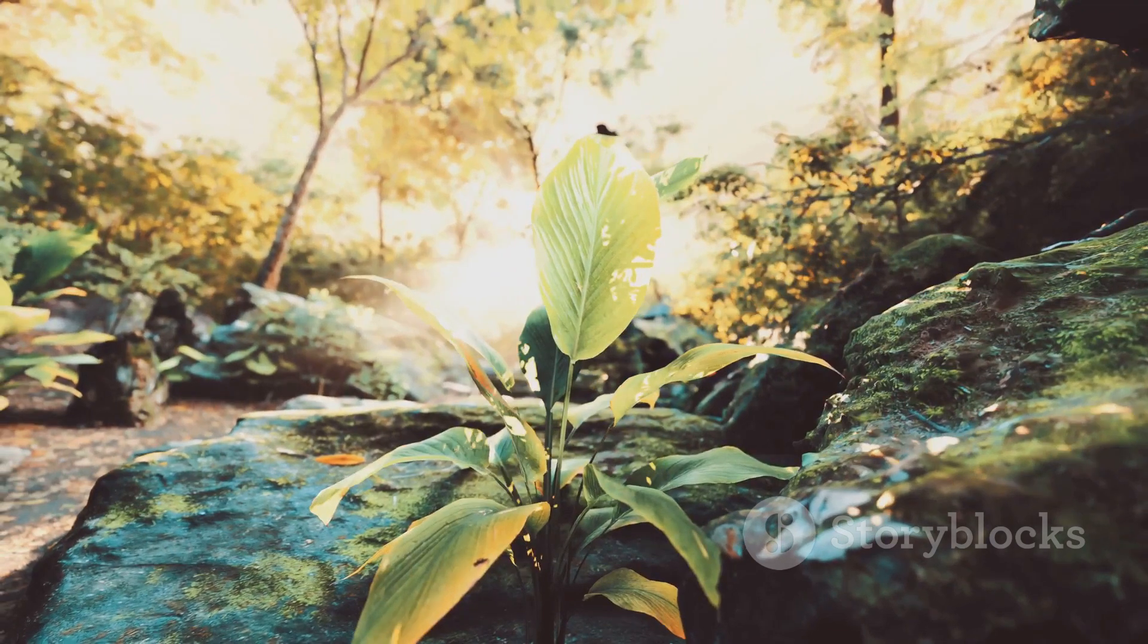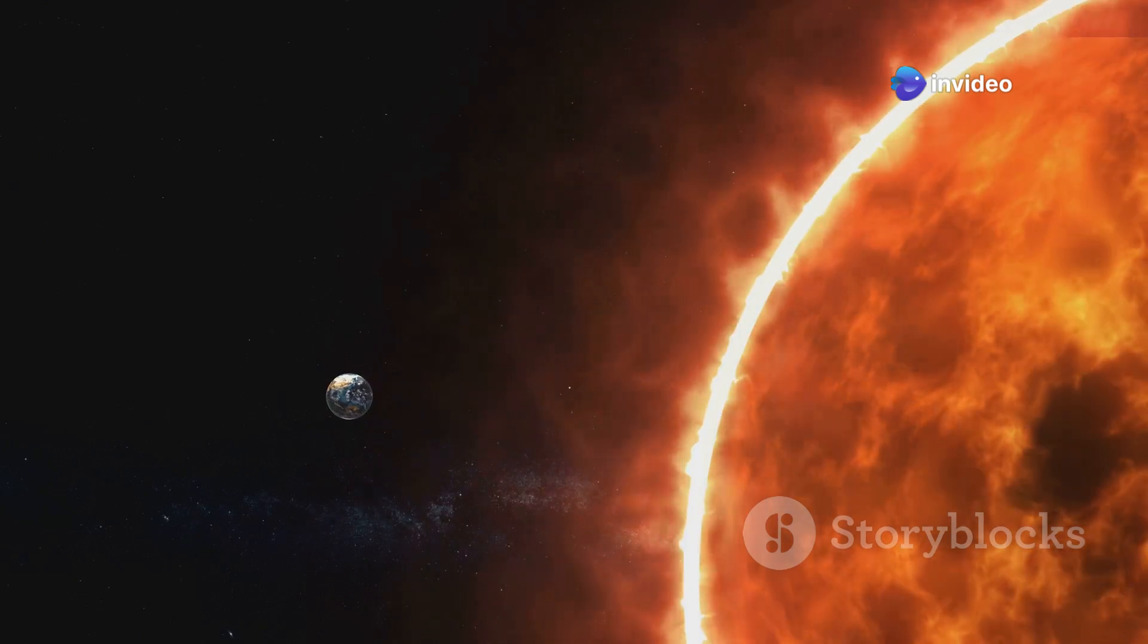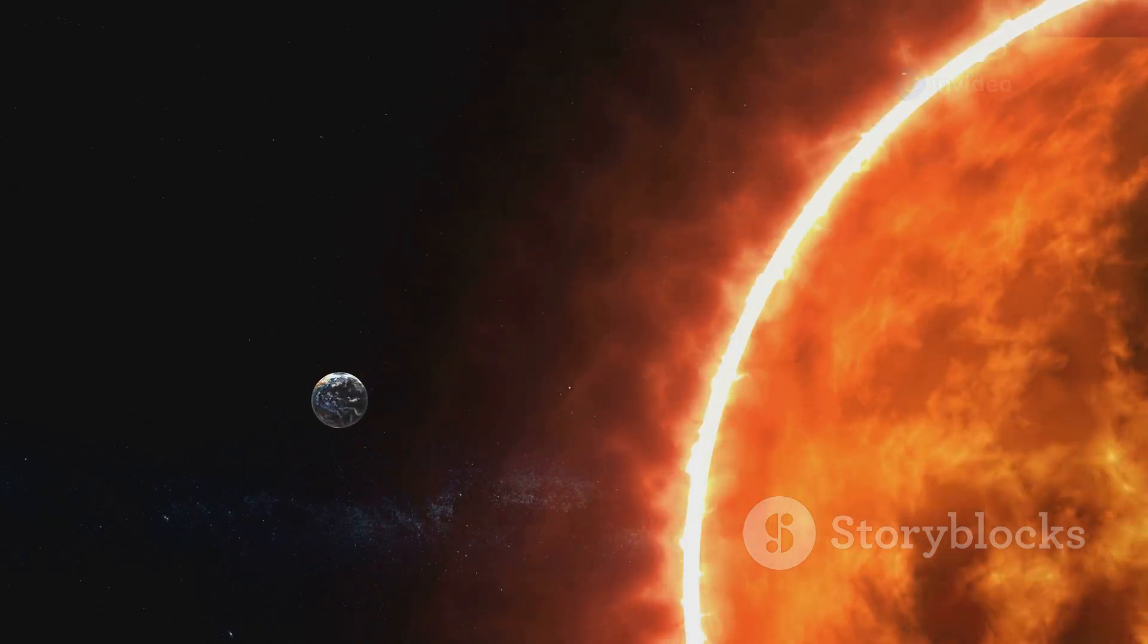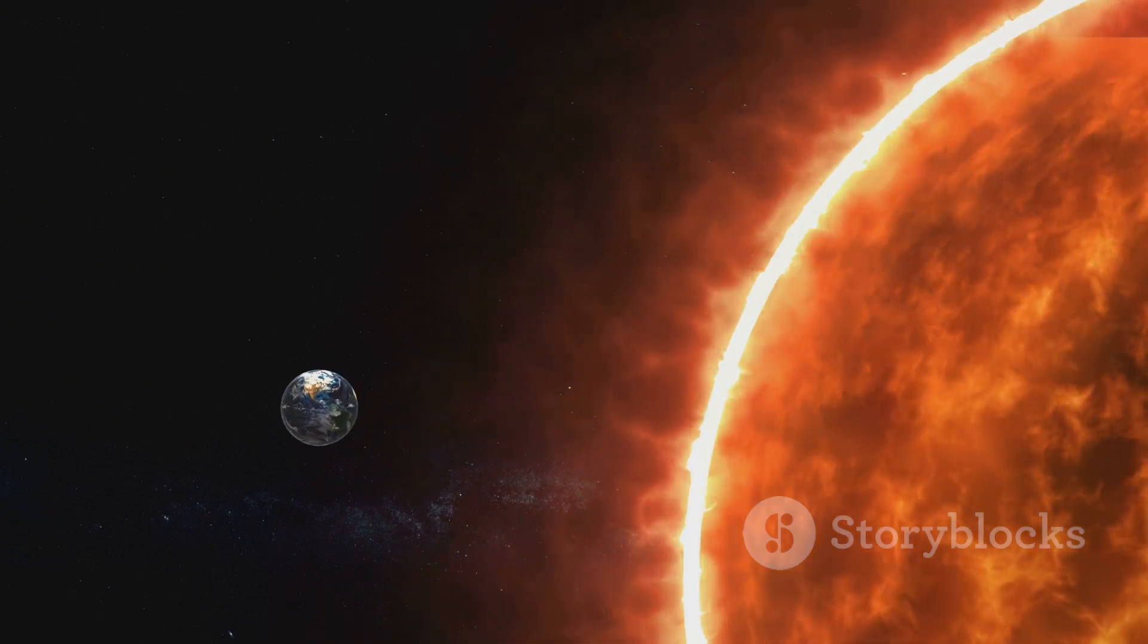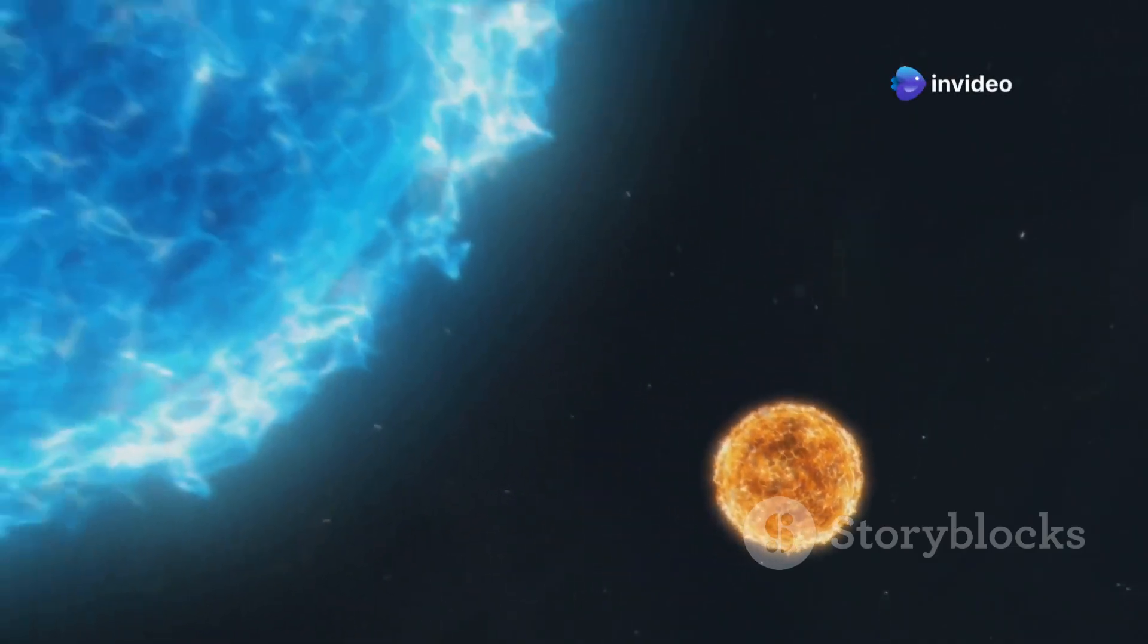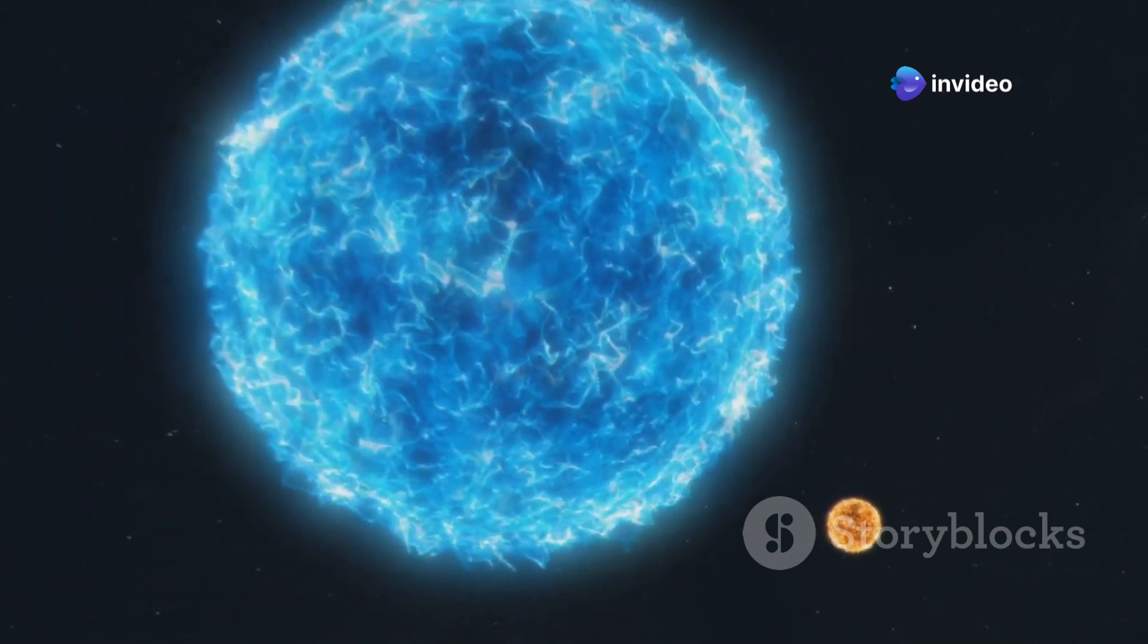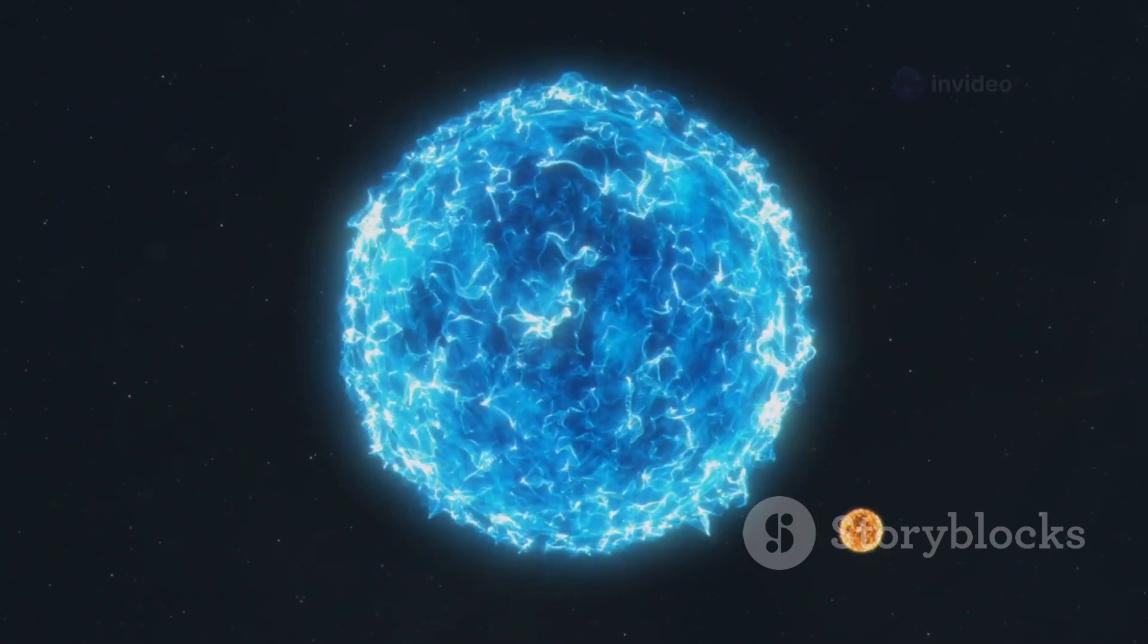We might think it's huge—after all, it dominates our sky and its gravitational pull keeps our planet in orbit. But in the vast expanse of the universe, our sun is just a small player. The sun is just a dwarf compared to some stars in the universe. There are stars out there that are hundreds, even thousands of times larger. These colossal stars make our sun look like a mere dot in comparison.